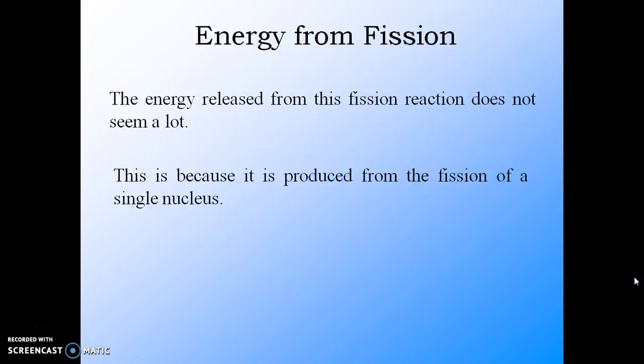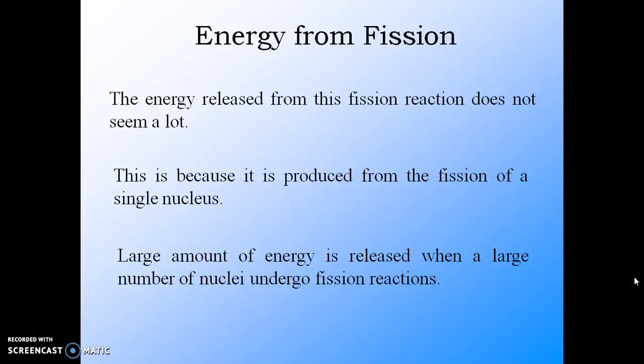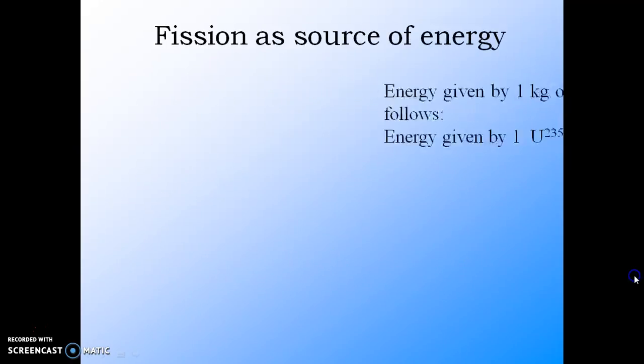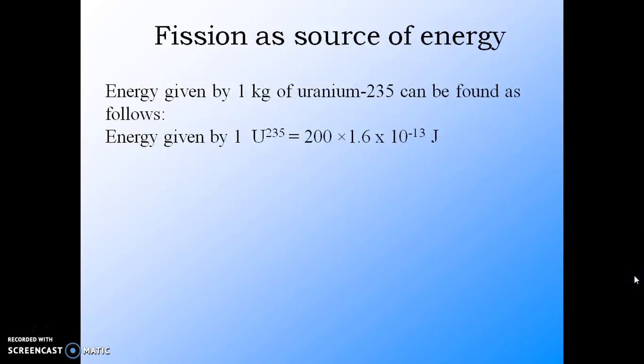The energy released from this fission reaction may seem very small because we are considering only one nucleus, and the energy per nucleus is only 200 mega electron volts. But if we consider a certain mass, then it seems to be very large. We can calculate what is the energy given by 1 kg of uranium.